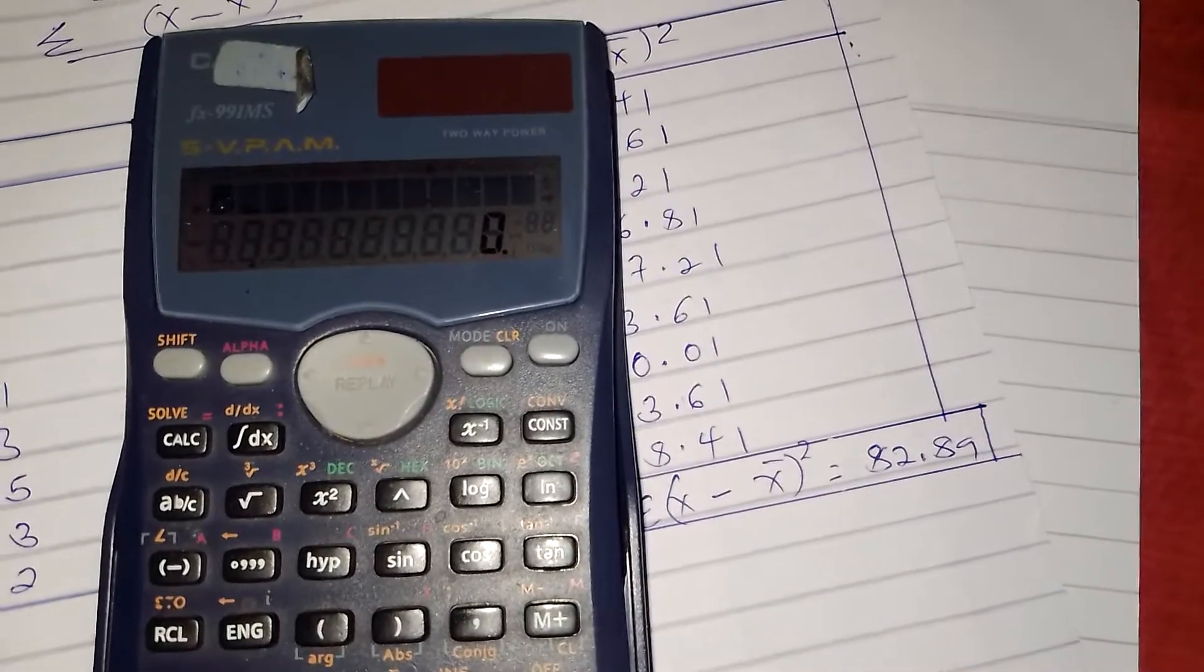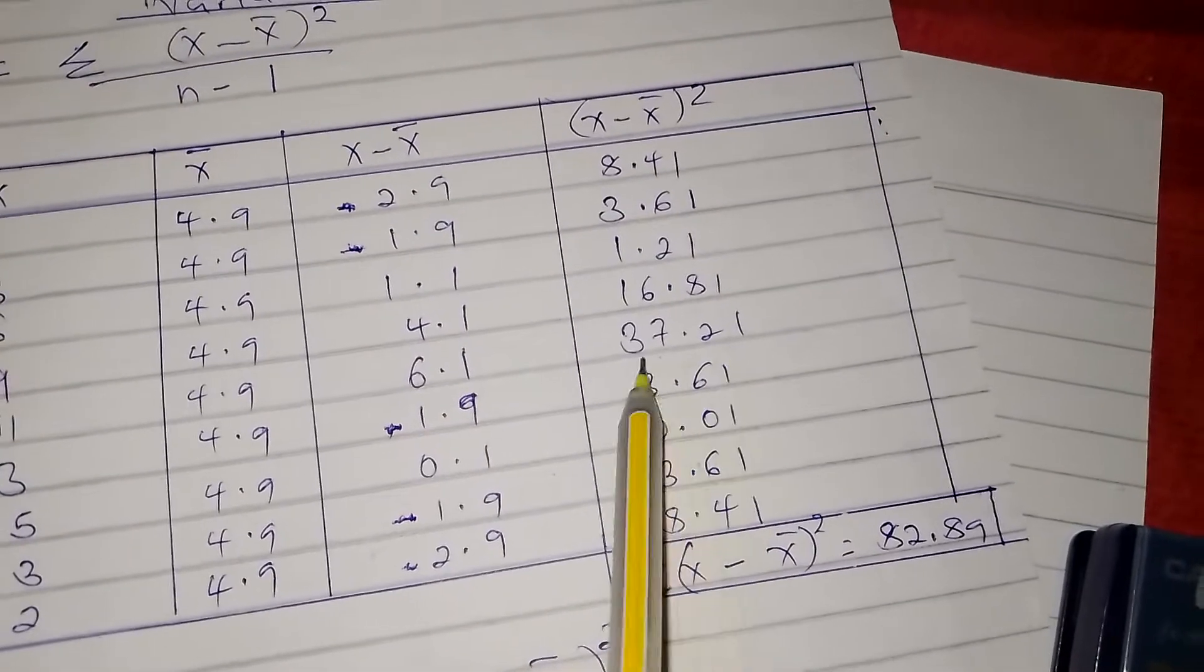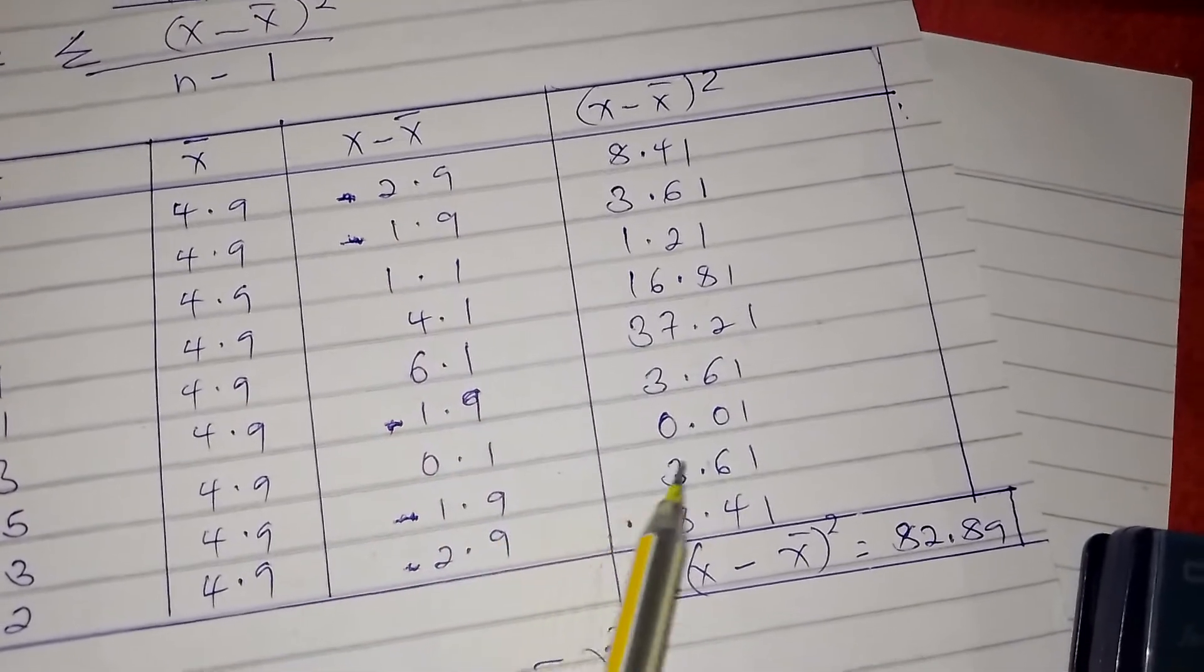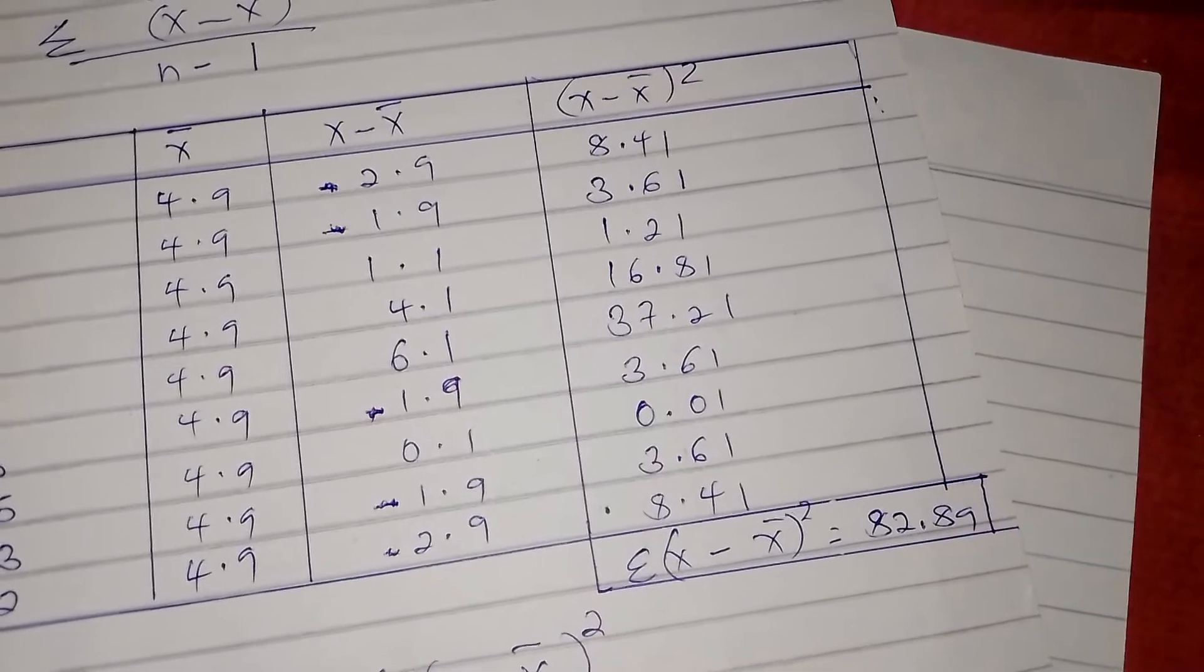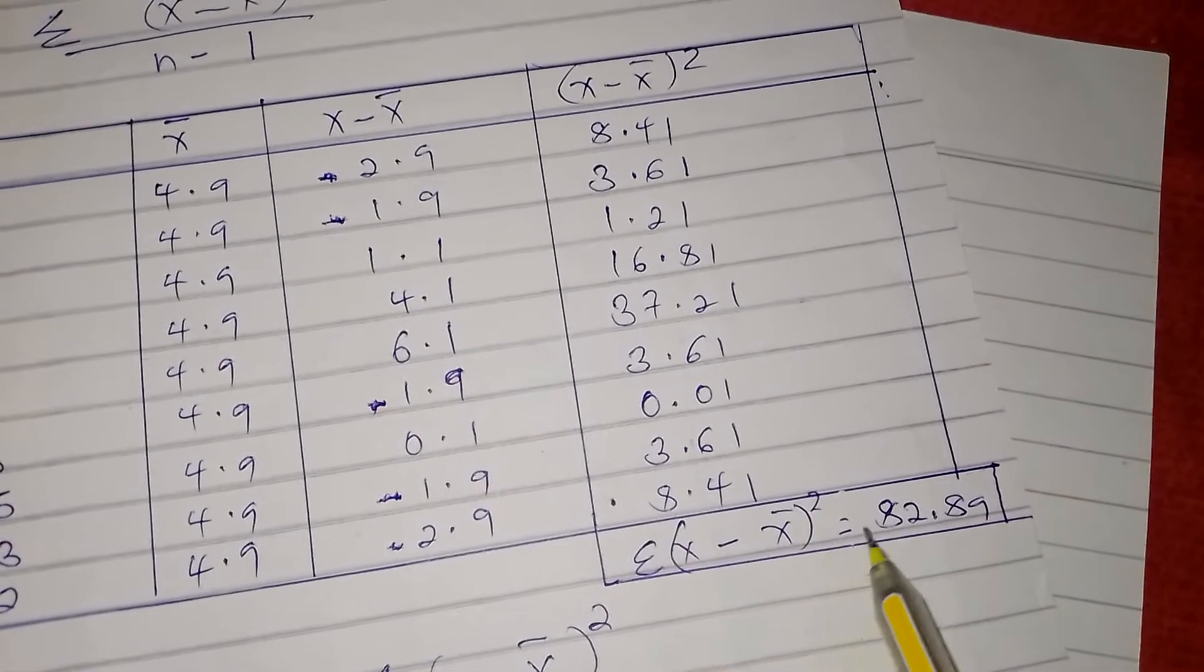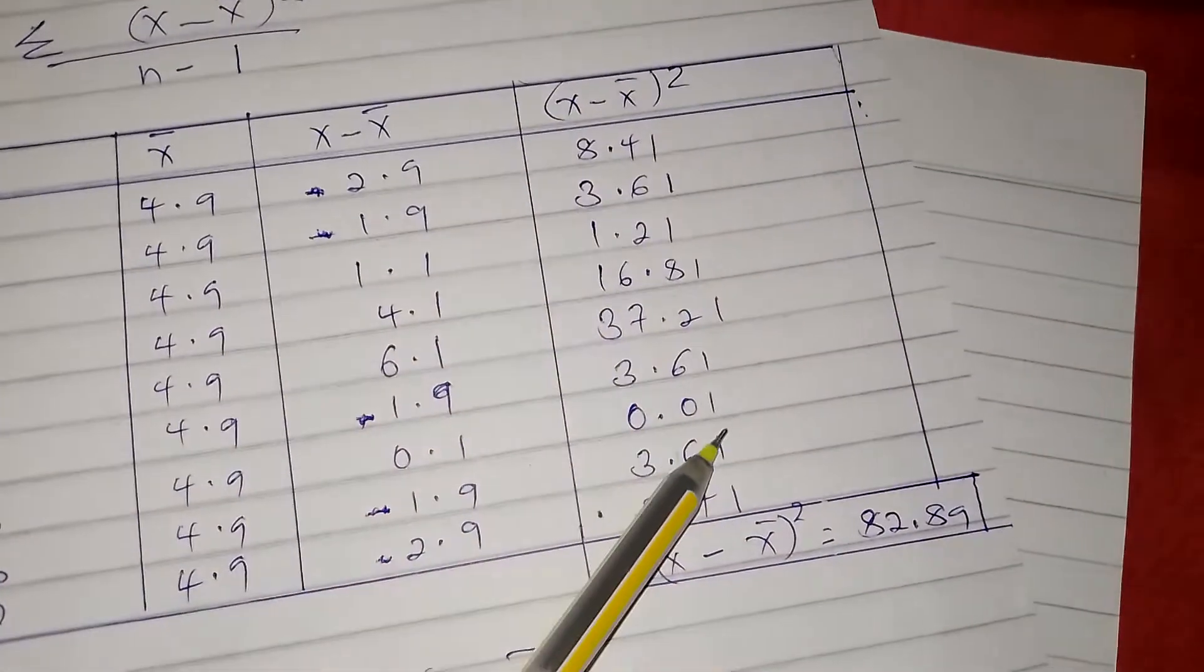6.1 squared equals 37.21. You do the same for all the figures—square them to get (x - x̄)².